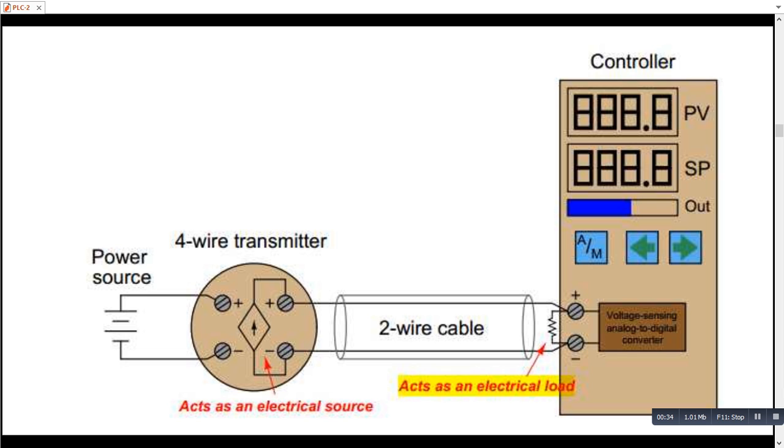So 4 to 20 mA correspond to the 1 to 5V and these voltages are then converted to digital value through analog to the digital converter. So this is how four wire transmitter works.